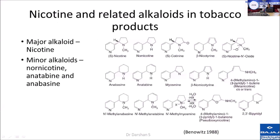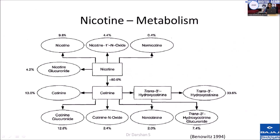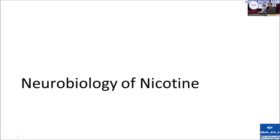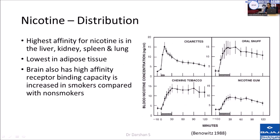The tobacco products have a lot of alkaloids which are psychoactive. Some of these are nicotine, and there are also others called norcotinine, anatabine, and anabasin. The major one is nicotine. Most of it gets metabolized to cotinine, which further undergoes changes such as glucuronidation and N-oxidation and so on, and all of these products then get excreted out of the body. Nicotine is consumed in oral, nasal, and smoked forms. The distribution is such that the highest affinity is in the liver, kidneys, spleen, and lungs, and the lowest in adipose tissue.